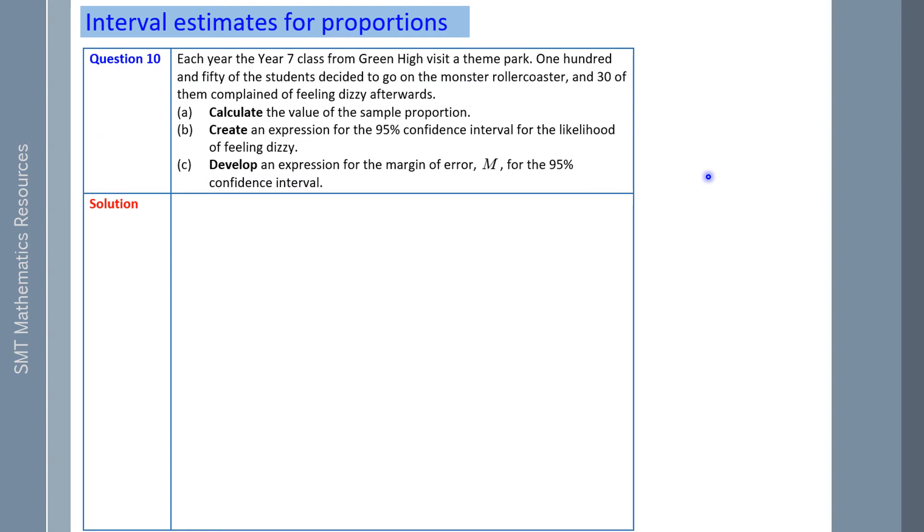Each year, the Year 7 class from Green High visit a theme park. 150 of the students decide to go on the monster roller coaster, and 30 of them complain to feeling dizzy afterwards. Calculate the value of the sample proportion. That is, the number of successful outcomes divided by the number of trials, which is 30 out of 150 felt dizzy, which is 20%.